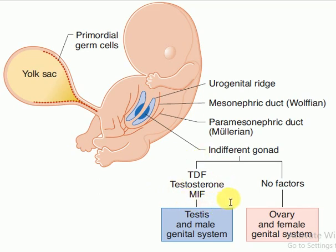So, we can see that this is a multifactorial process of developing a normal male. If any of these factors are out of place, this creates the opportunity for mixed gender abnormalities.